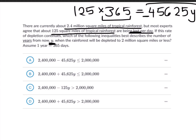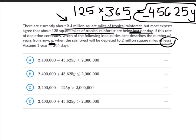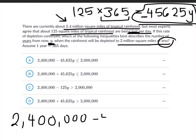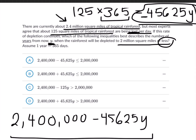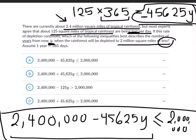We're losing 45,625 square miles of rainforest per year, so this is our rate of change — and we're decreasing. This is the rate of change, and 2.4 million is our base number. They told us we want to find how many years it takes for the rainforest to be depleted to 2 million square miles or less, so the entire expression must be less than or equal to 2 million. Looking at the options, this matches option A — so that is our answer.